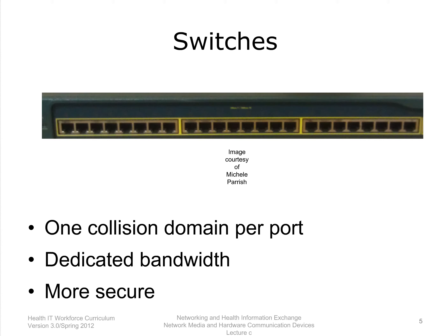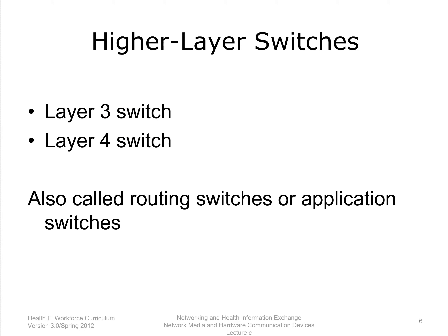Switches operate at layer 2, the data link layer, of the OSI model. There are more sophisticated switches that can operate at other layers in addition to layer 2. Layer 3 switches can interpret layer 3 network information, and layer 4 switches can interpret layer 4 transport information.